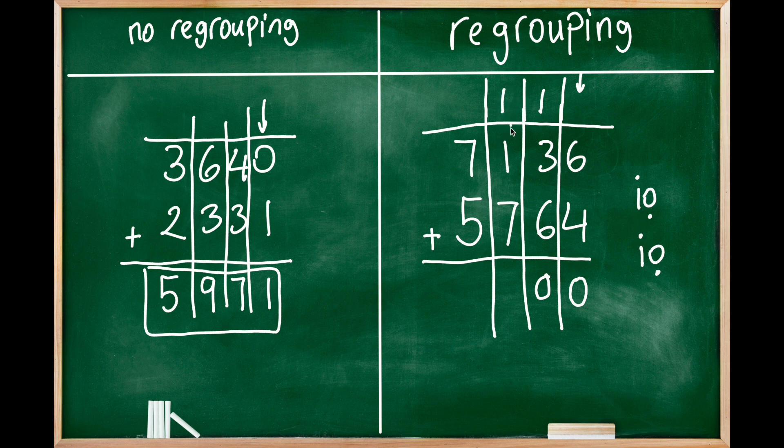Then we add the values in the hundreds place. One plus one is two, two plus seven is nine, and nine is one digit number so no carryover. Seven plus five is 12, so 12 is two digit number.